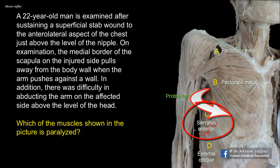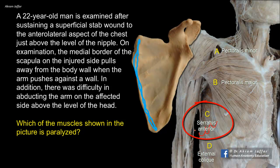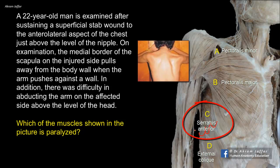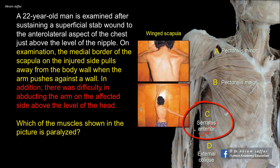Serratus anterior muscle protracts the scapula — that is to say, it moves the scapula forwards — since the muscle is attached to the anterior surface of the medial border of the scapula. When the muscle is paralyzed due to injury of its nerve supply, the medial border of the scapula appears to project backwards, giving the appearance of a wing when the patient presses against the wall. This condition is called winged scapula. In addition, the patient is unable to raise the arm above the head owing to inability to rotate the scapula during abduction above a right angle. This lateral rotation of the scapula is established by the action of both serratus anterior and trapezius muscles, the upper and lower fibers of trapezius acting like a couple.